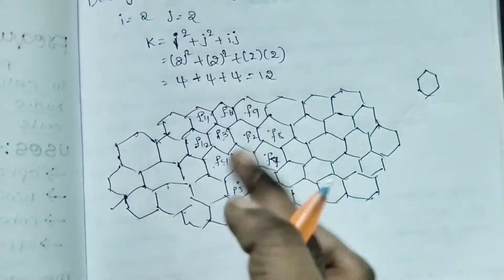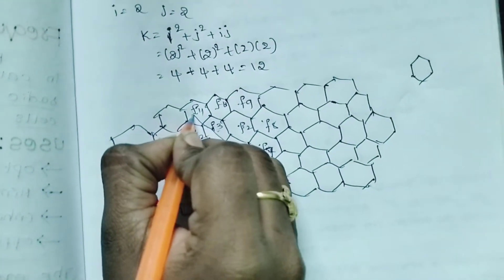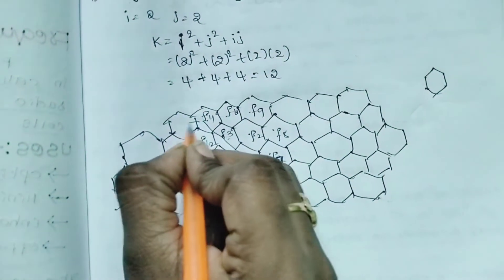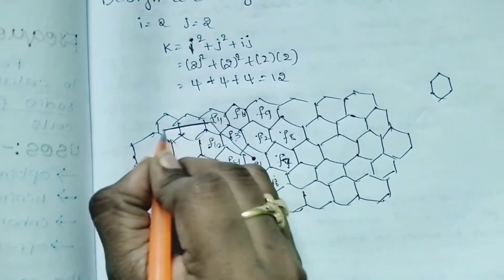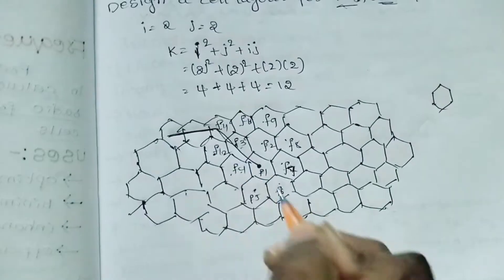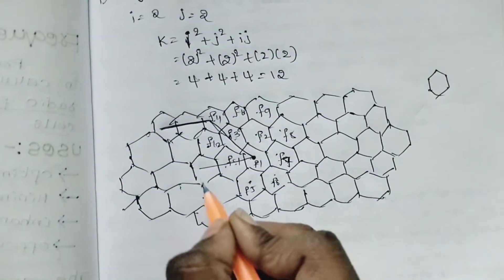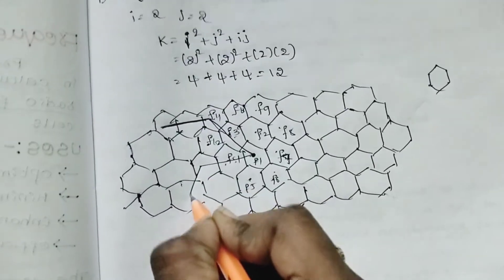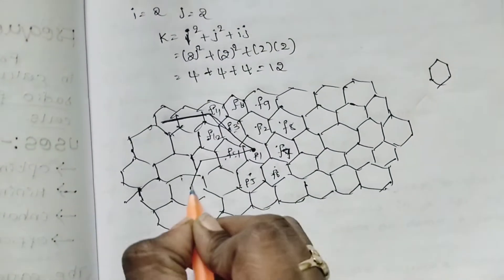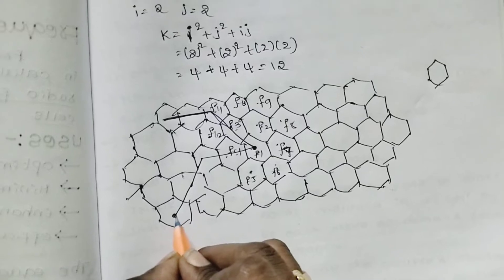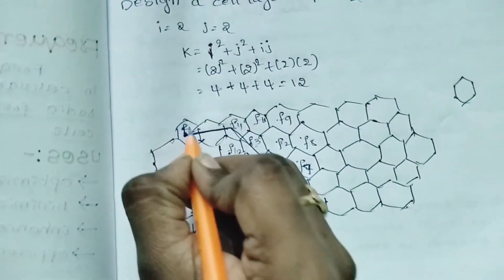There will be 2 counts for i equals 2: count 1, 2. Next, j equals 2: count 1, 2. Here already the cell is placed. So we count 1, 2, and here we can use f1 frequency. Here we can use f1 frequency again.